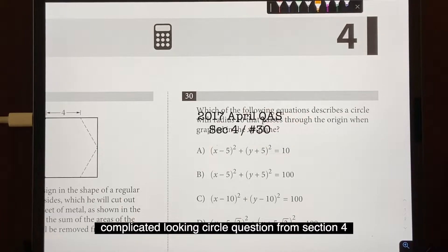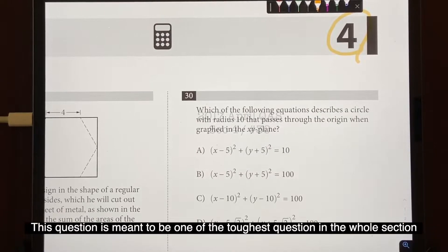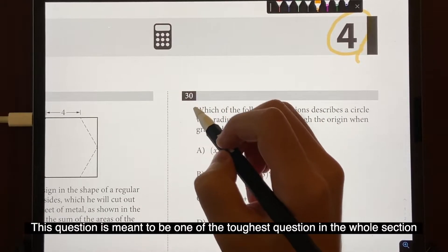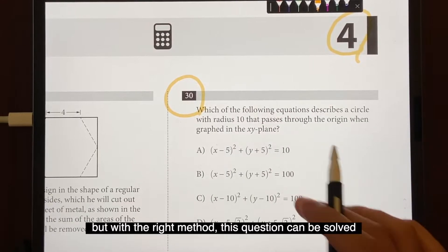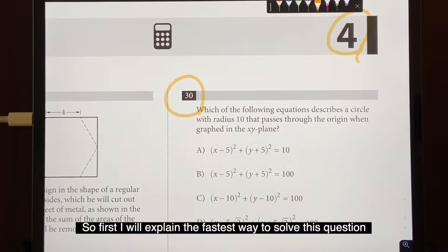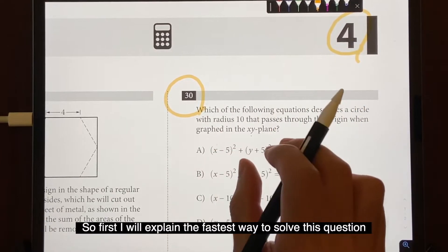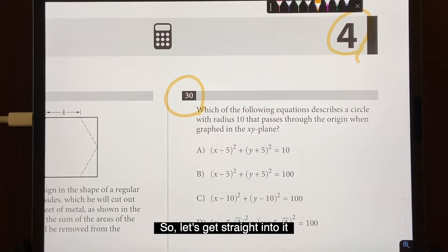What's up guys, today we'll go over a complicated looking circle question from section 4. This question is meant to be one of the toughest questions on the whole section because it's the last question on the multiple choice. But with the right method, this question can be solved within a matter of seconds very easily. So first I'll explain the fastest way to solve this question and then demonstrate how long it would actually take during the actual SAT. So let's get straight into it.